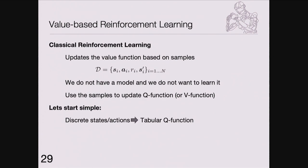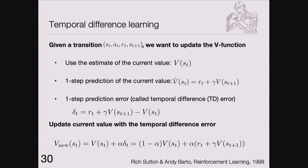With tabular Q functions, when you observe one transition from one state-action pair to the next state receiving a reward, you can form a one-step prediction: the reward received plus the value of the next state. Subtracting your current estimate gives a one-step prediction error — the temporal difference error, or TD error. The update rule is: V(s) ← V(s) + alpha * TD_error. Unfolding it: this is (1 - alpha) times the original value plus alpha times the target — a geometric average.